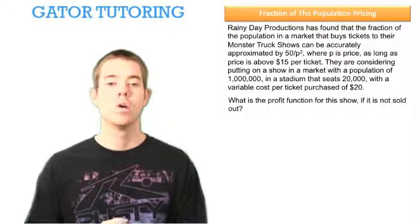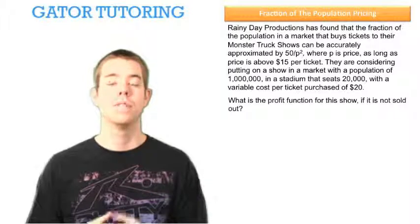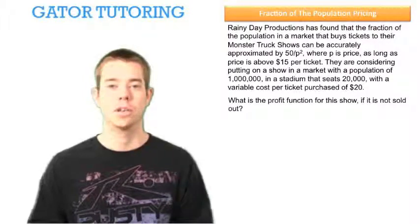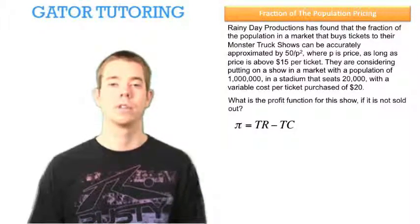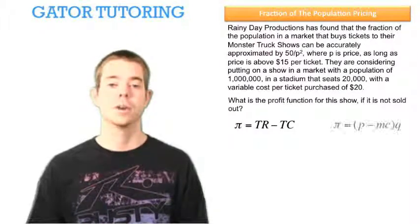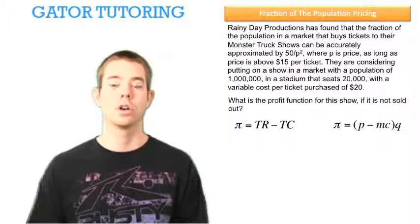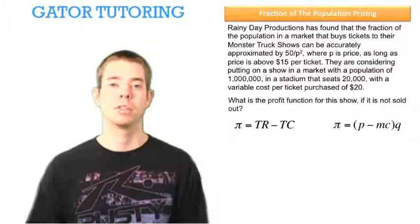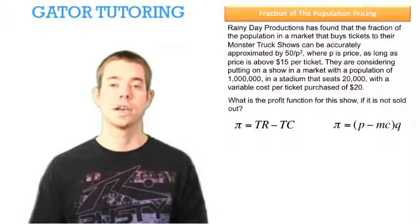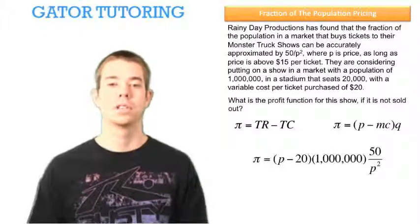The first question says, what is the profit function for this show if it is not sold out? So we're going to ignore any capacity constraints and just find profit. We know that profit is equal to total revenue minus total cost, which can also be written as price minus marginal cost times quantity, where quantity is the fraction of the population that buys a ticket times the size of the population. So our profit function is this.